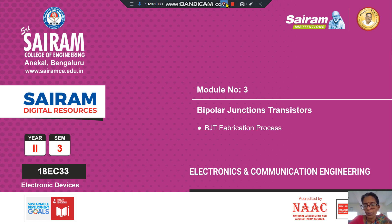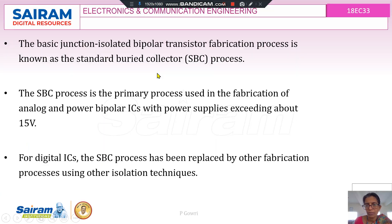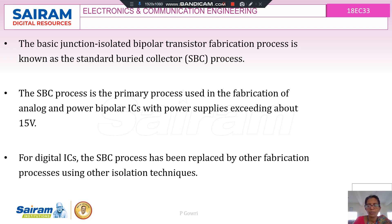Hello students, welcome to the video on BJT fabrication process. We will be seeing all the steps involved in fabricating a single BJT. The basic junction isolated bipolar junction fabrication process is known as the Standard Buried Collector (SBC) process, which is the primary process used in the fabrication of analog and bipolar ICs with power supplies exceeding about 15 volts. For digital ICs, the SBC process has been replaced by other fabrication processes using different isolation techniques.